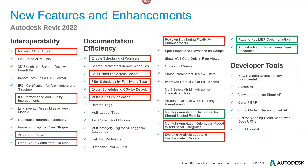The next slide outlines the interoperability and documentation efficiency updates. Highlighted in red are the most beneficial for MEP, including cross-platform items. There's a native 2D PDF export — a new PDF export tool and workflow. Other highlights include sharing views and enabling worksets for scheduling, plus maintaining annotation orientation for shared nested families, improvements to MEP documentation, and auto shading in two-column panel schedules for electrical.